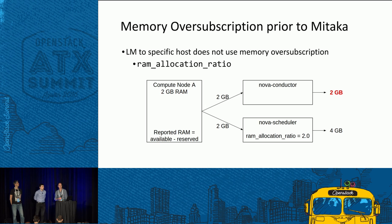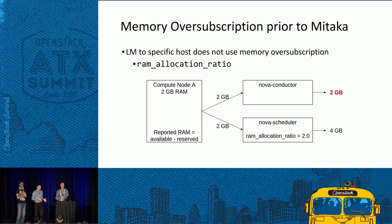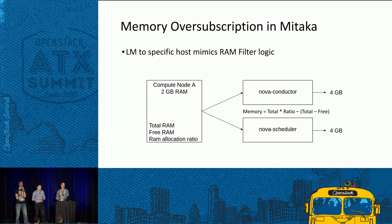Prior to Mitaka, there was also a problem with memory over-subscription. When you trigger live migration to a particular host and skip the scheduler, the RAM allocation ratio was part of Nova scheduler configuration, so Nova conductor couldn't calculate the correct amount of memory on the destination. To solve this, we moved the RAM allocation ratio to the compute node so both Nova conductor and Nova scheduler can read it and calculate available memory in the same way.